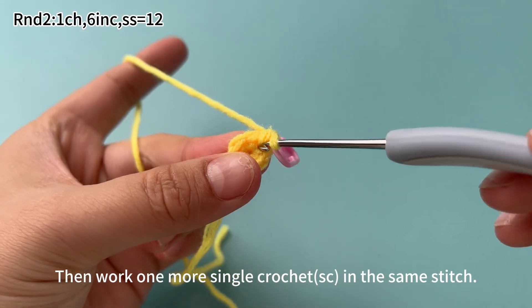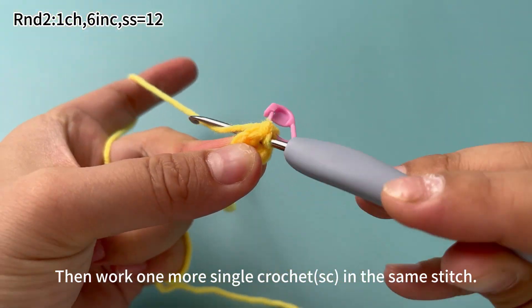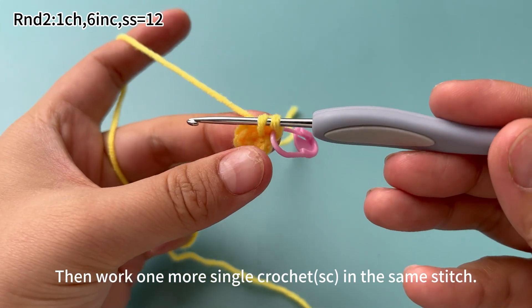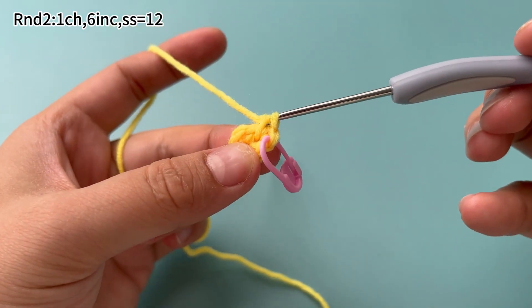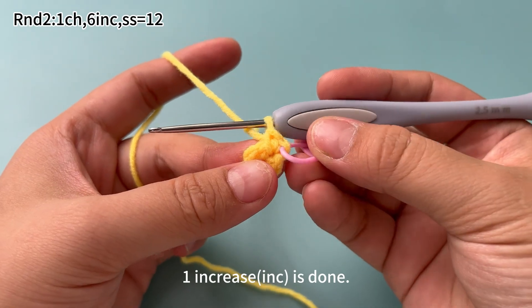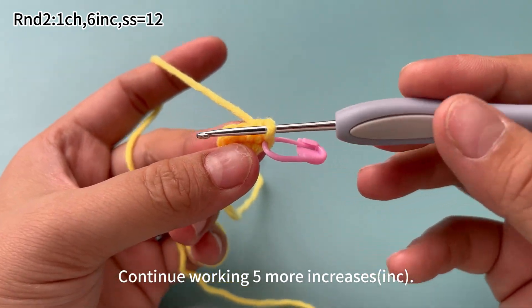Then work 1 more single crochet in the same stitch. One increase is done. Continue to work 5 more increases.